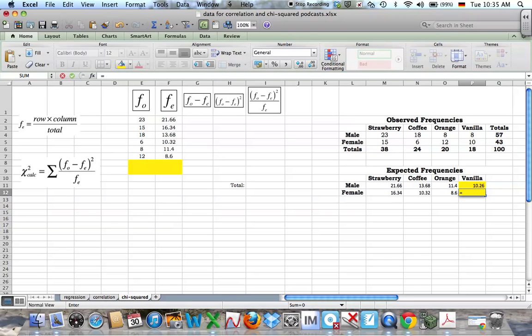And then I'm just going to do the same for the females. So I want a bracket, total females multiplied by total people who like that flavor, divided by the number of people altogether.